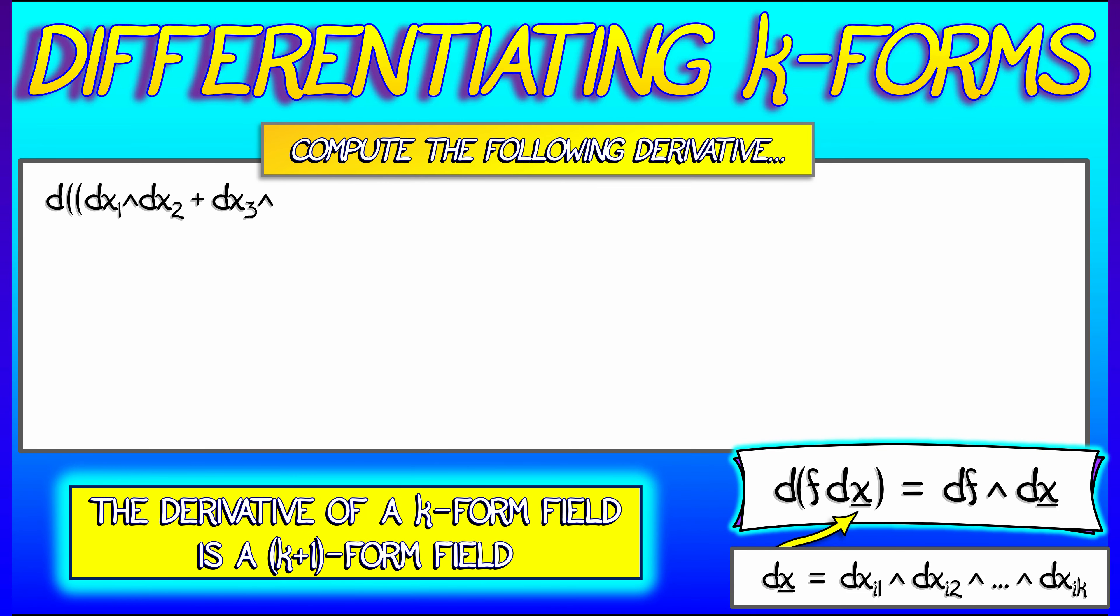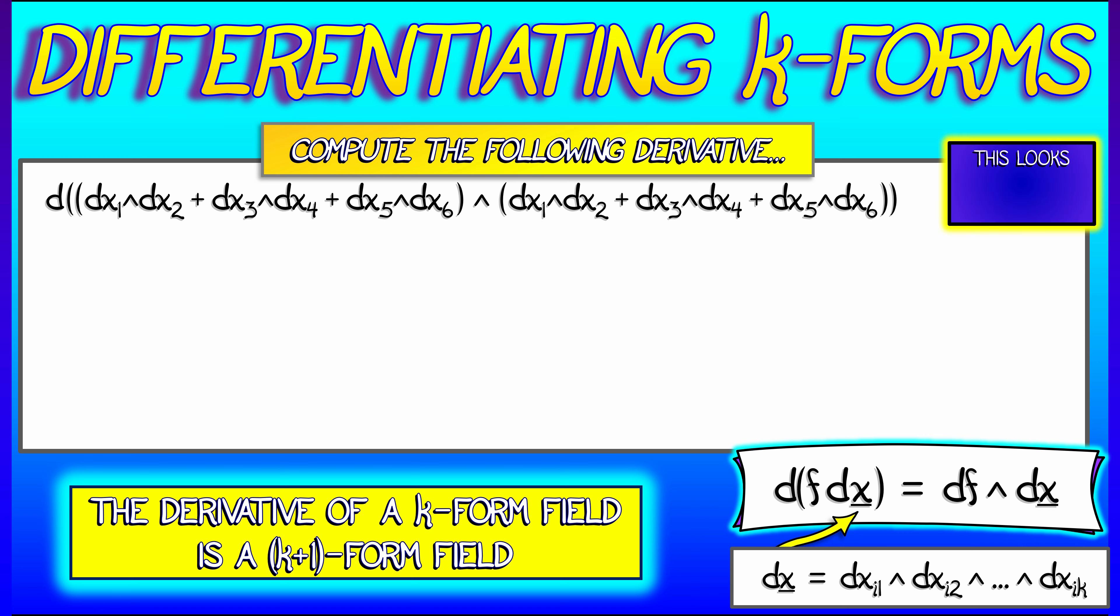All right, so consider the following weirder-looking example. Let's say you have the two-form field dx1 wedge dx2 plus dx3 wedge dx4 plus dx5 wedge dx6, and consider the derivative of that two-form squared. That means wedge that two-form with itself, then take the derivative.